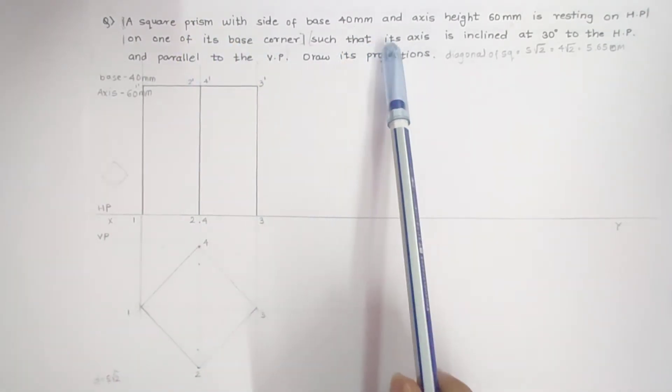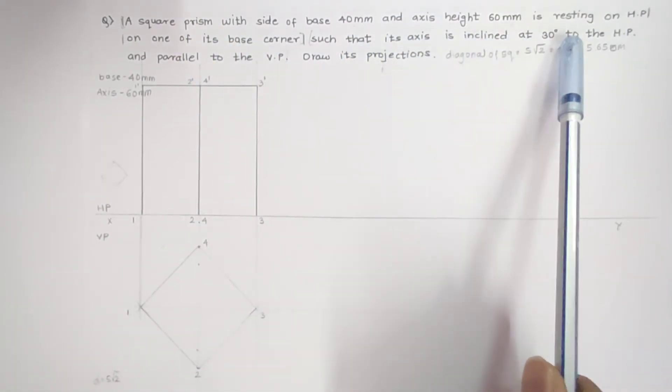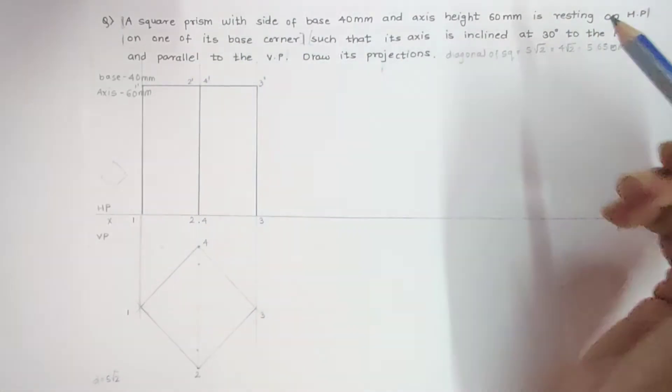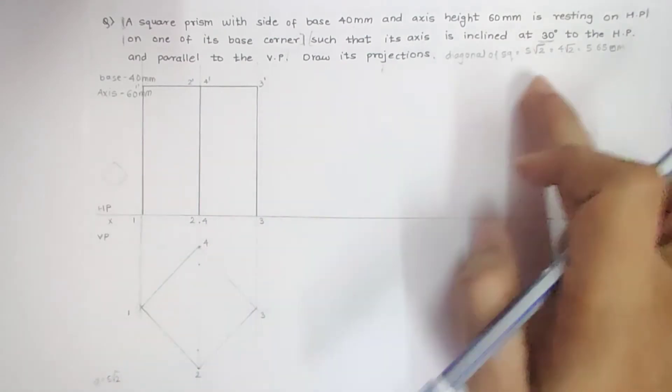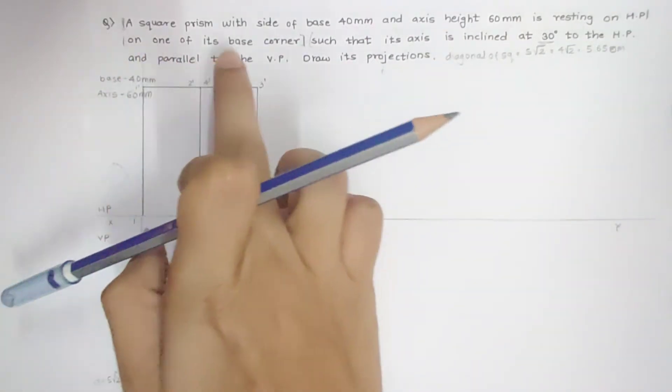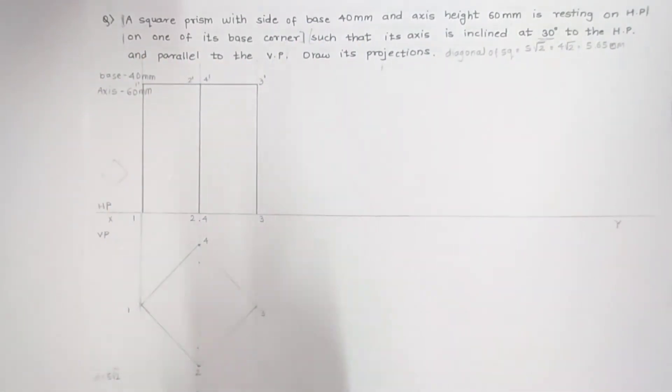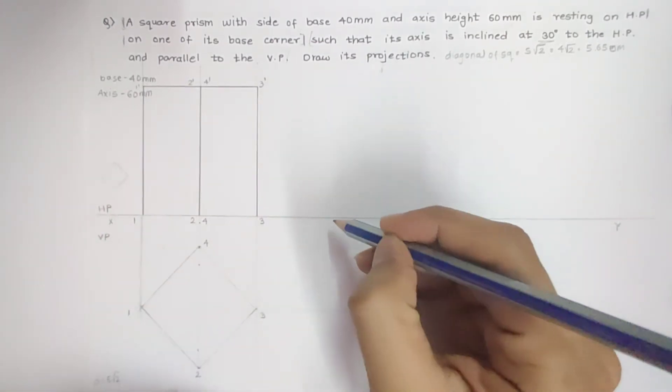Second part - the axis is inclined at 30 degrees to the HP, to this horizontal plane, and parallel to the VP. So I will take first a point over here.